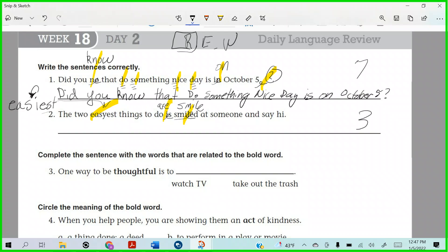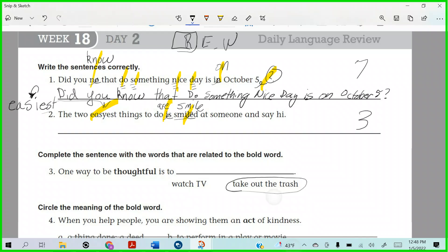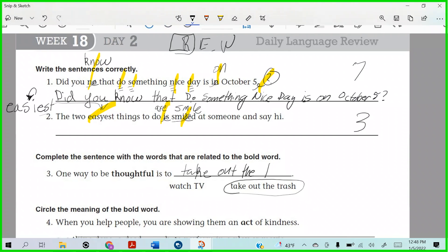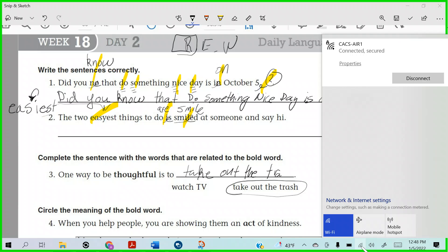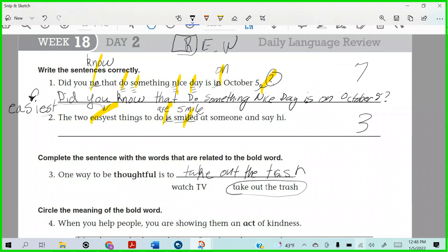Alright, complete the sentence with the words that are related to the bold word. One way to be thoughtful is to watch TV, right? What? I feel like it's really thoughtful to sit around and watch TV. No, it's take out the trash, right? It's a thoughtful thing to do. I have children who don't do that and it gets on my nerves.